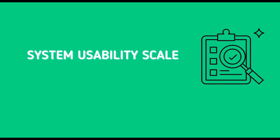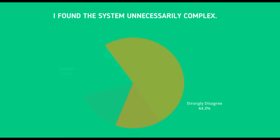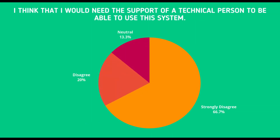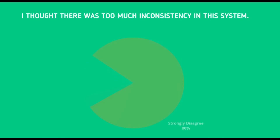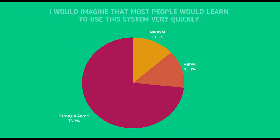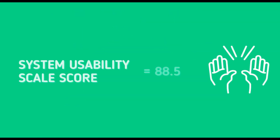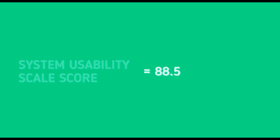For the usability testing, we used the system usability scale where we asked a group of 15 testers a set of 10 questionnaires having options 1 to 5, going from strongly disagree to strongly agree. After doing the calculations from the data that we collected, we finally obtained a system usability scale score of 88.5. This shows that our design was good and easy to use.